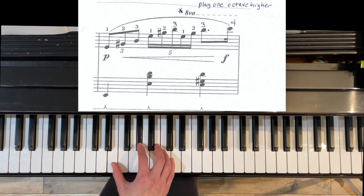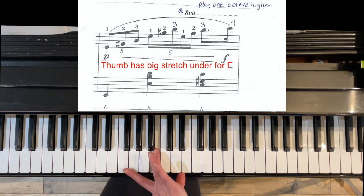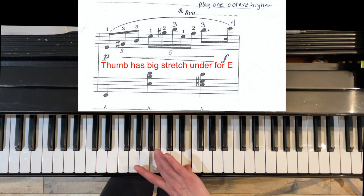So we start with E, G sharp, B, thumb's coming under, finding the next E, which is a long stretch by the way. Look how long that is. Big stretch.